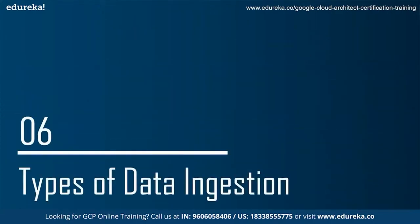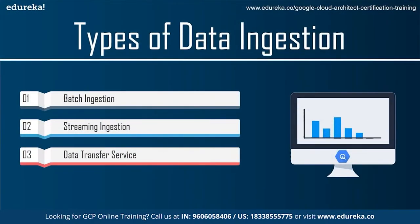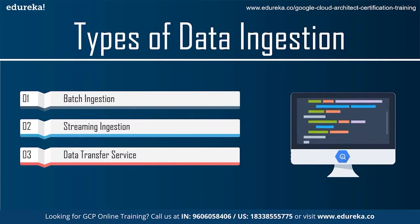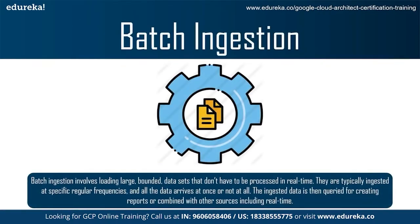There are multiple ways to load data into BigQuery depending on data sources, data formats, load methods, and use cases — batch ingestion, streaming ingestion, and Data Transfer Service. Batch ingestion involves loading large bounded datasets that don't have to be processed in real-time. They are typically ingested at specific regular frequencies and all the data arrives at once or not at all. The ingested data is then queried for creating reports or combined with other sources. BigQuery batch load jobs are free — you only pay for storing and querying the data, not for loading it. Cloud Storage is the recommended place to land incoming data for batch use cases, and loading from Cloud Storage to BigQuery supports multiple file formats like CSV, JSON, Avro, Parquet, and ORC.